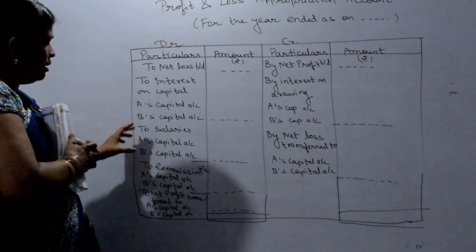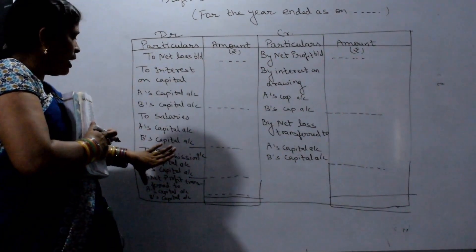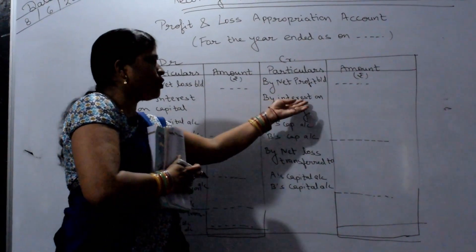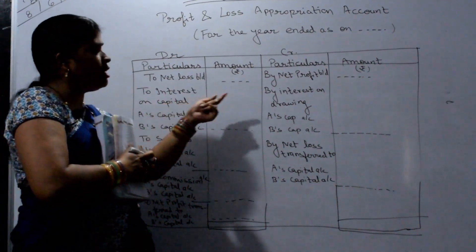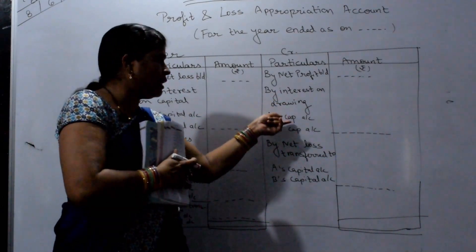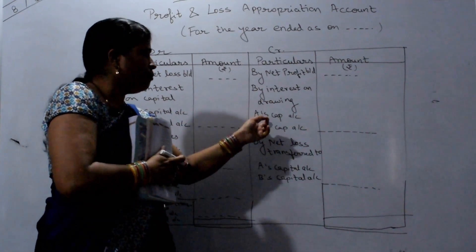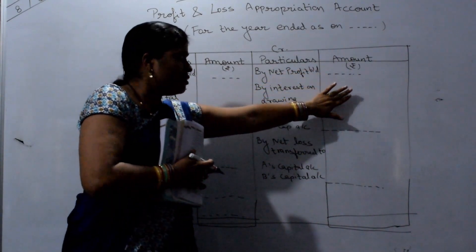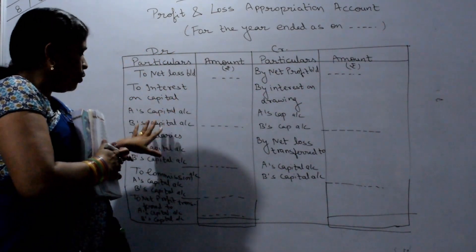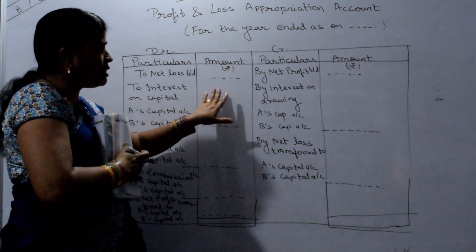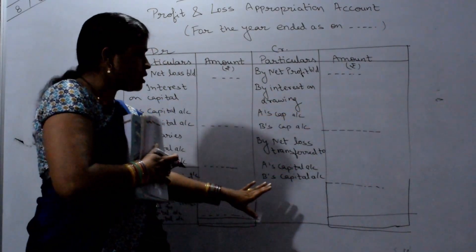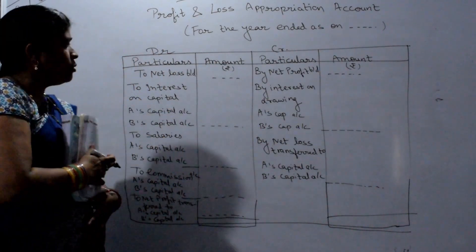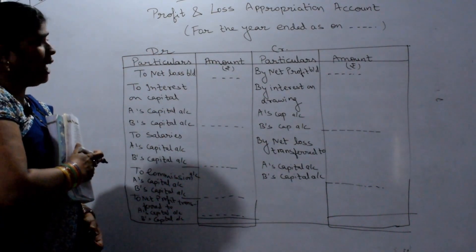After that, the remaining profit is distributed among the partners. On the credit side, we record interest on drawings, because interest on capital is our expense and interest on drawings is our income. If the debit balance is more, it means we have a net loss, which we will transfer to the partner capital account. We will be solving numerical problems in the next lecture. Thank you very much.